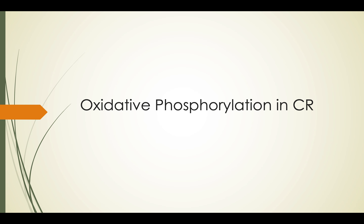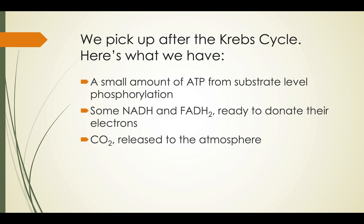Starting with oxidative phosphorylation, that last step in cellular respiration. We ended off last time after the Krebs cycle, so let's take stock of where we are. We made a little bit of ATP from substrate level phosphorylation — that is the version of making ATP where an enzyme puts an inorganic phosphate onto ADP, making some ATP. We also made quite a bit of NADH and FADH2.